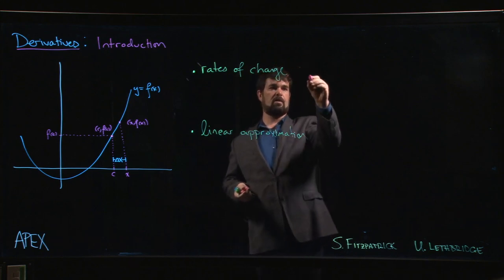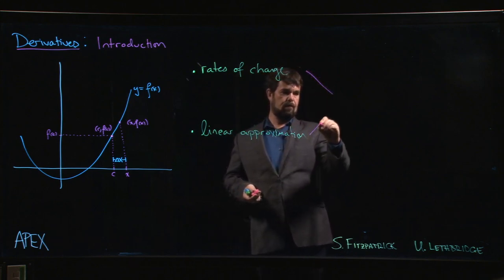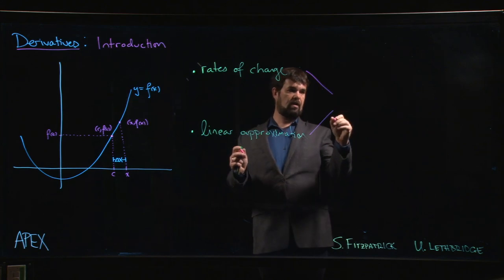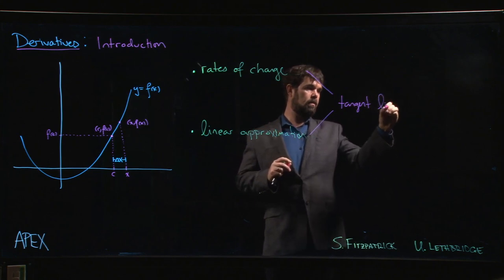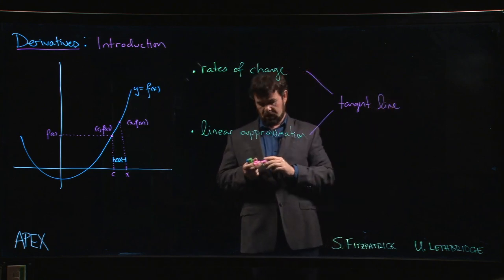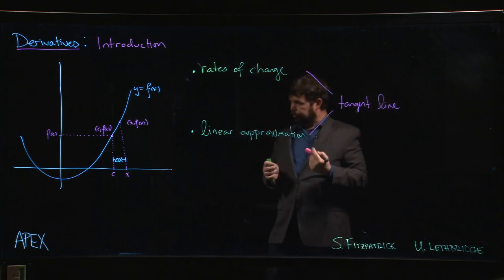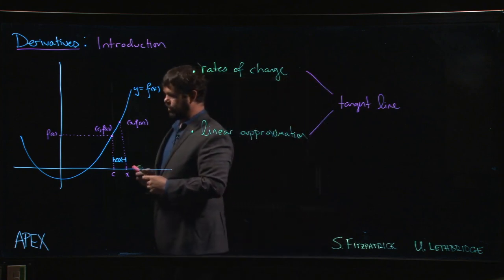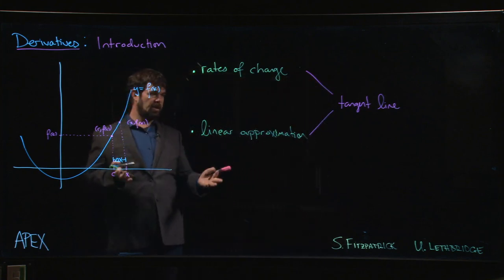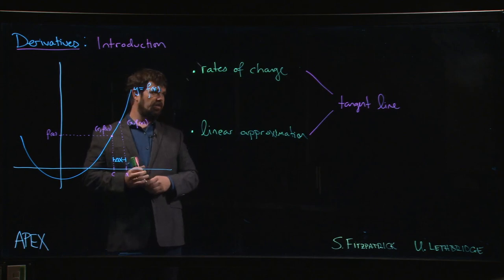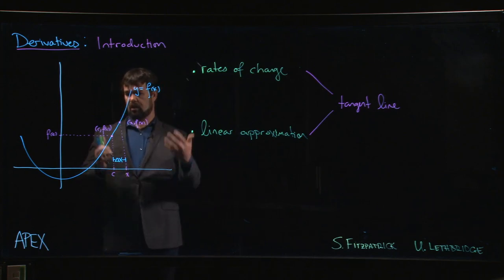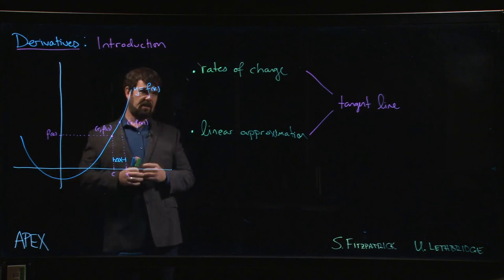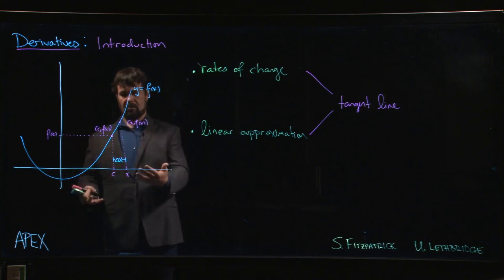We've got this picture here because it turns out that both of these ideas can be captured in one geometric construction, which is this idea of the tangent line. A lot of the focus in Calc 1 is in using derivatives to compute slopes of tangent lines to graphs like this.